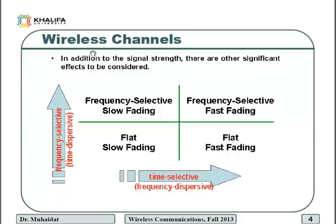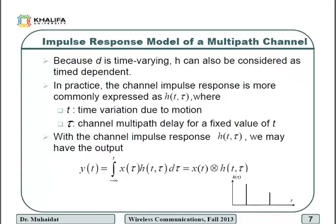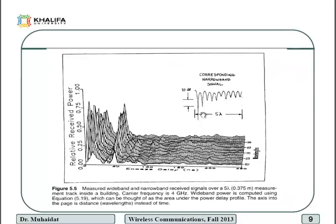In any radio transmission, the channel spectral response is not flat. As shown in this figure of the channel frequency response, you can see there are dips and fades — it's not a straight line. That's what 'not flat' means.